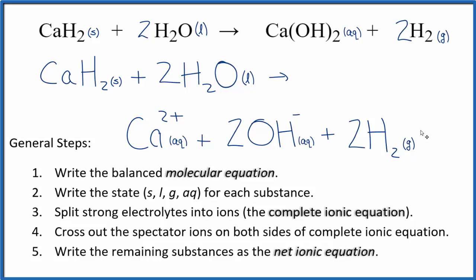So at this point we would cross out spectator ions, but there aren't any. Everything here is unique. So this is the net ionic equation for CaH2 plus H2O. And we're saying that we're doing this with excess water so that we have this aqueous solution here. If we had the precise amounts for this reaction to happen, this would actually be a solid here.